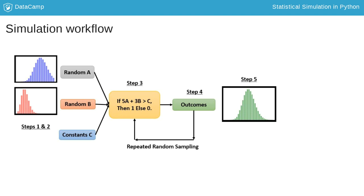In step 4, we repeatedly sample from the distributions of A and B to generate outcomes. Finally, in step 5, we analyze outcomes.